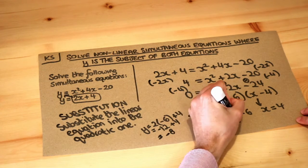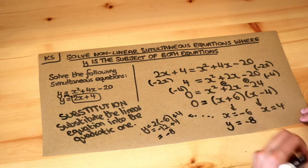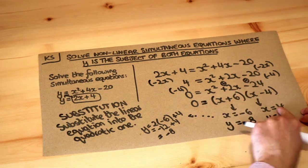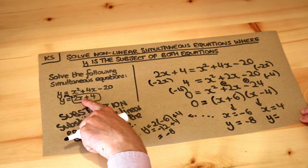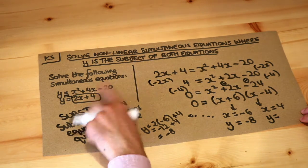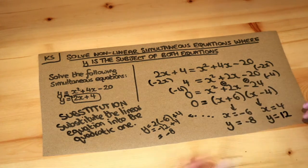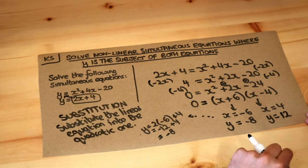And then if I substitute the 4 into this, 2 times 4 is 8 plus 4 is 12, so y is 12. So there we go, we've got two sets of solutions to this equation.